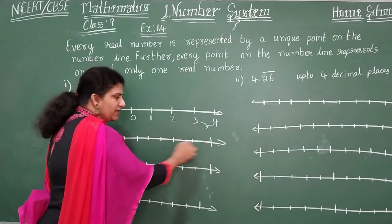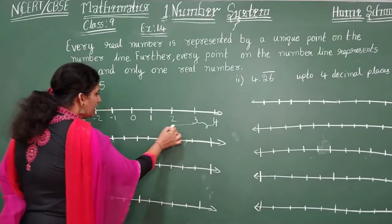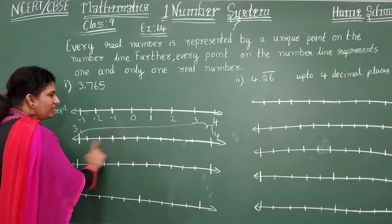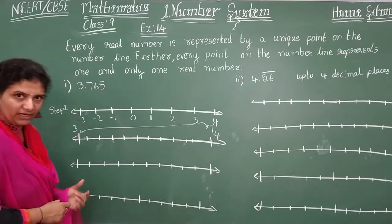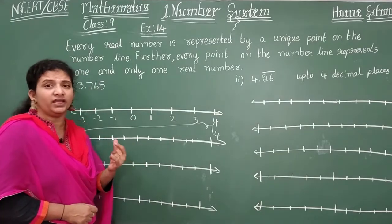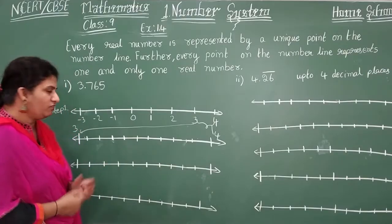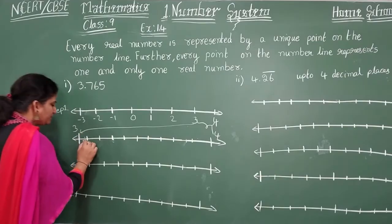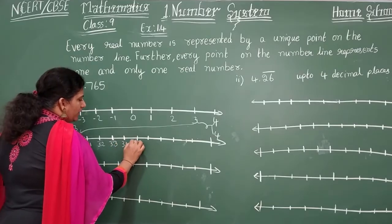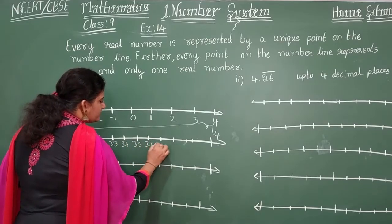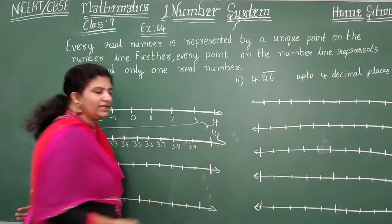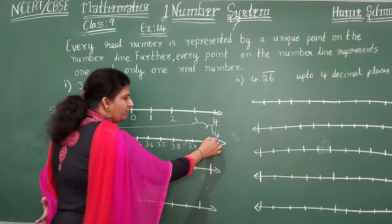When you zoom, it will be visible very clearly. So in between these two numbers, again we are going to divide into 10 units. On the next number line, take this 3 here and this 4 here, and divide in between 3 and 4 into 10 divisions. Every unit is divided into 10 divisions now. So it becomes: 3.1, 3.2, 3.3, 3.4, 3.5, 3.6, 3.7, 3.8, 3.9, and 3.10 which is nothing but 4.